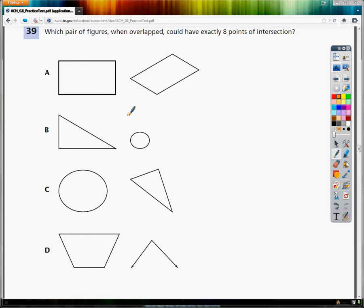This is the TCAP practice test for grade 8, question number 39. It asks, which pair of figures, when overlapped, could have exactly 8 points of intersection?